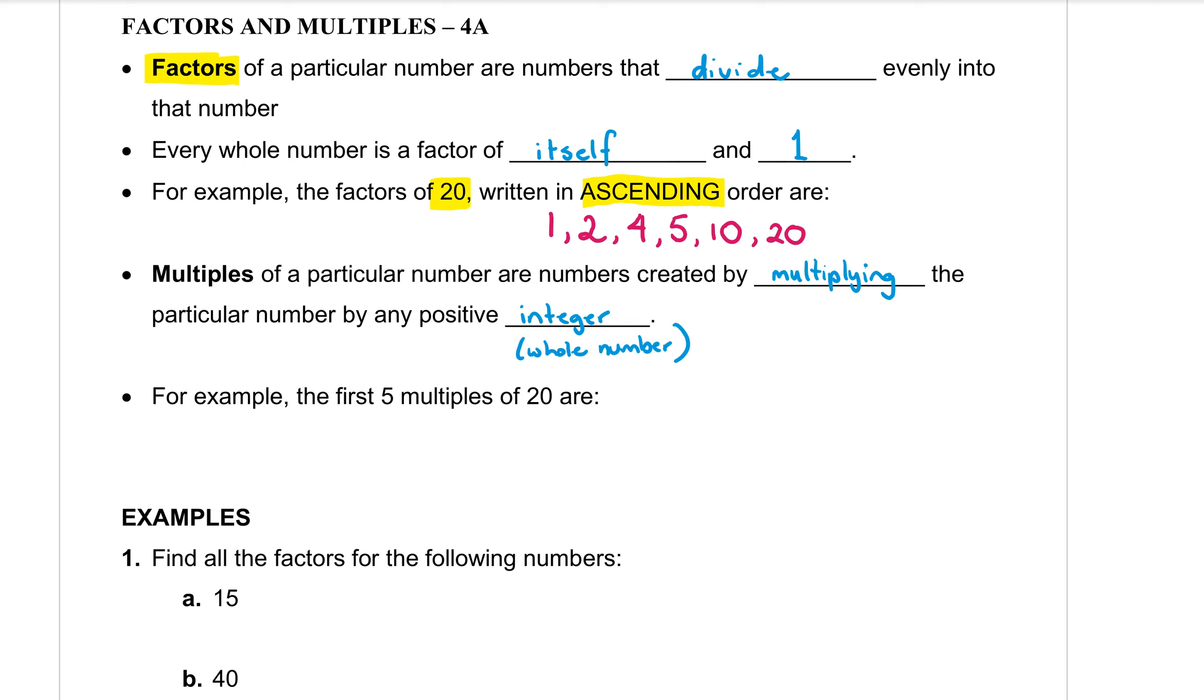You can also see when you look at those factors that they work in pairs. So 1 times 20 makes 20. 2 times 10 makes 20 and 4 times 5 makes 20. So that can be useful in making sure that you don't miss any.